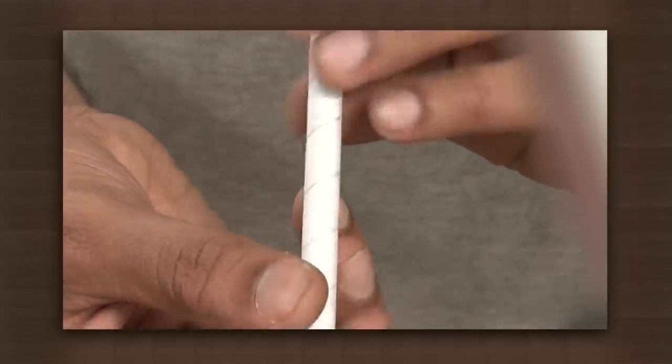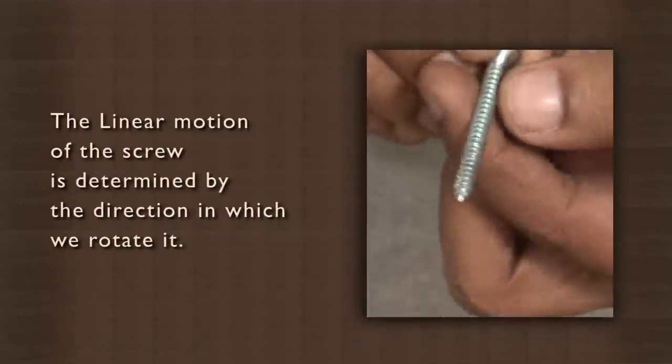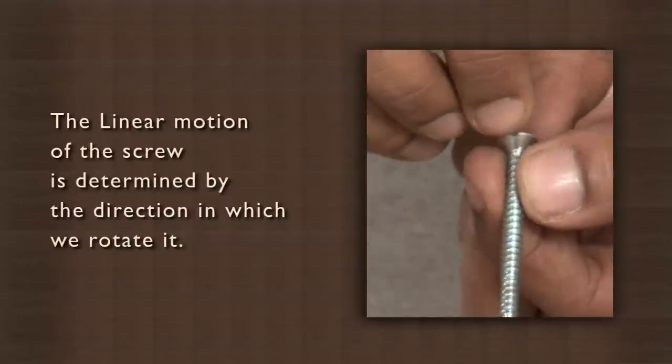This shows the linear direction in which a screw will move when we apply rotational force to it. The linear motion of screw is determined by the direction in which we rotate it.